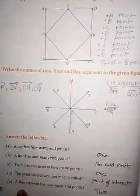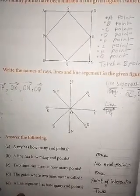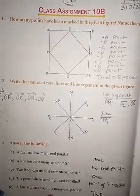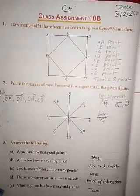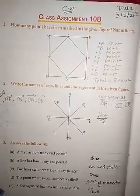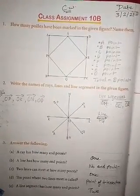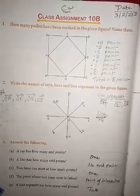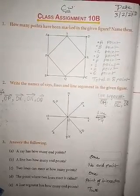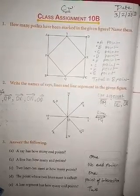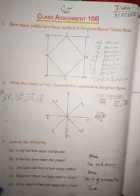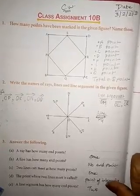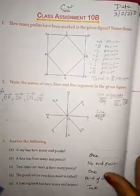E: A line segment has how many endpoints? Two — a line segment has two definite end points. Clear.